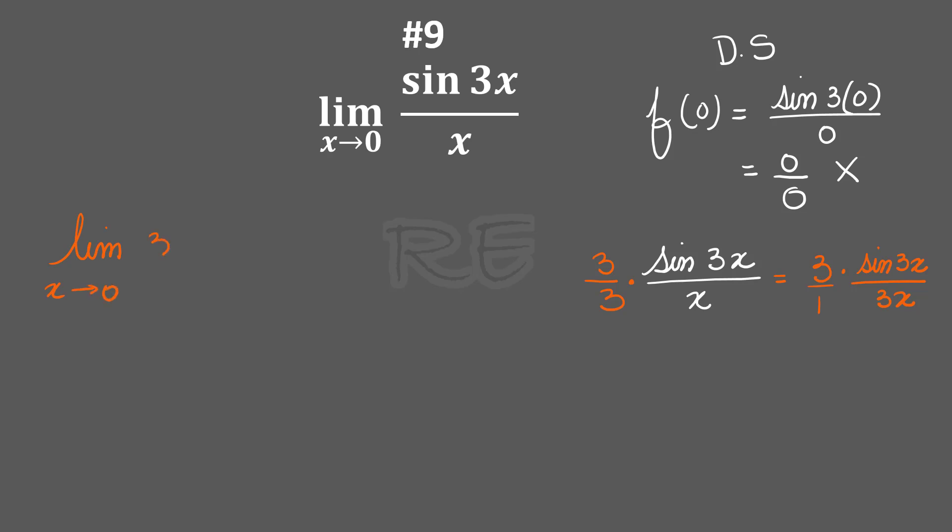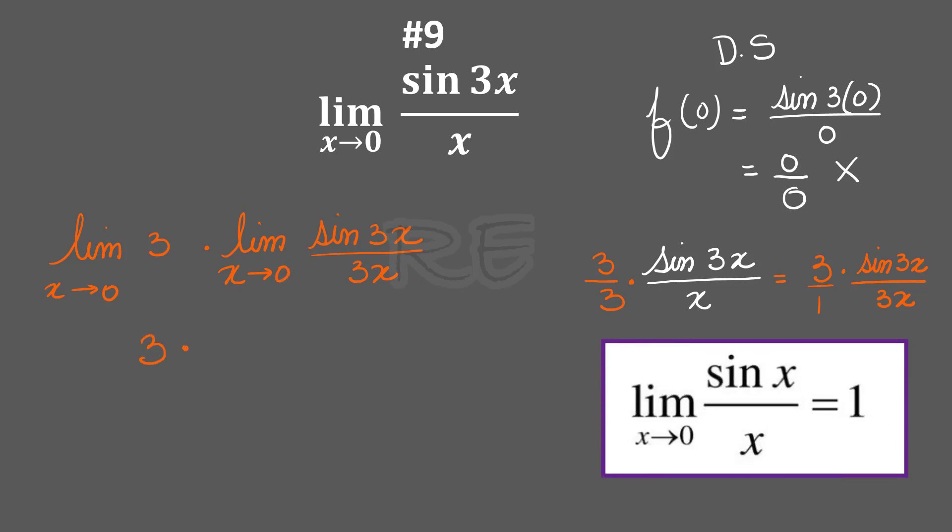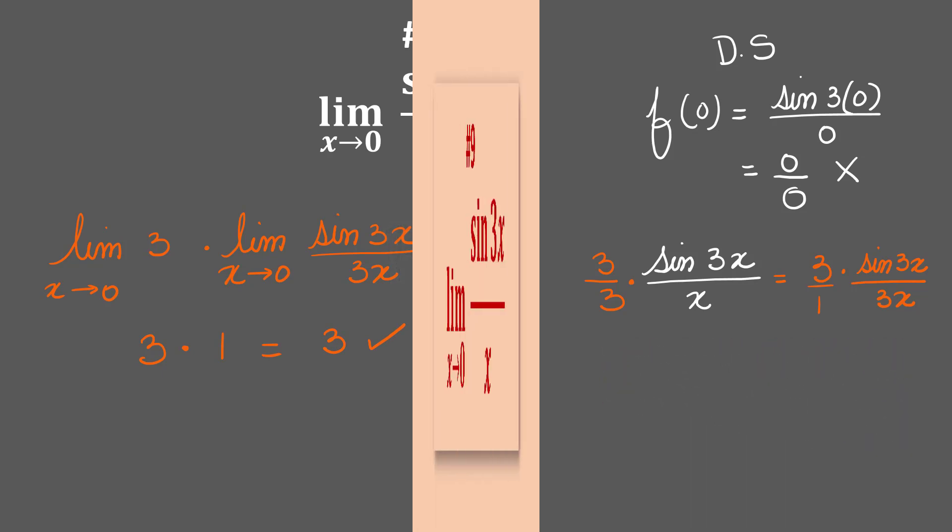So our original function will become limit of 3 as x approaches 0 times limit of sine 3x over 3x as x approaches 0. The limit of 3 as x approaches 0 is 3, and the limit of sine 3x over 3x as x gets closer to 0 is 1, and 3 times 1 is 3.